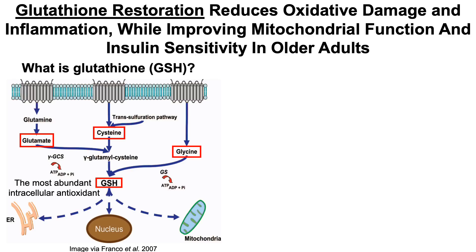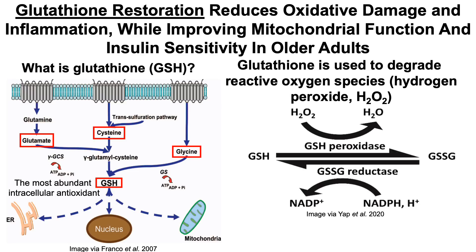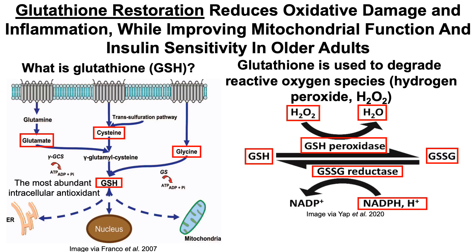Glutathione is the most abundant intracellular antioxidant. As an example, glutathione is used to degrade reactive oxygen species — in this case, hydrogen peroxide. In the presence of glutathione (GSH), glutathione peroxidase, and hydrogen peroxide (H2O2), the hydrogen peroxide is degraded into water. Correspondingly, glutathione becomes oxidized, forming GSSG — glutathione disulfide — where two molecules of glutathione become bonded together. Oxidized glutathione (GSSG) can then be reduced back to glutathione by GSSG reductase in the presence of NADPH.